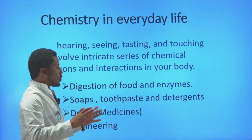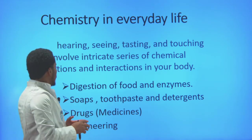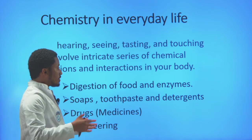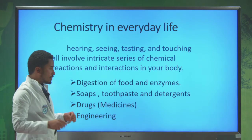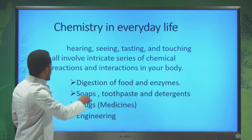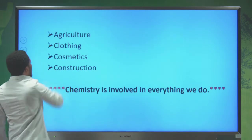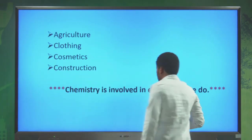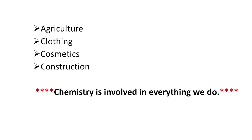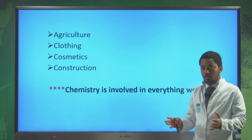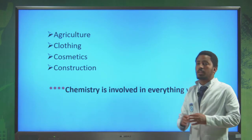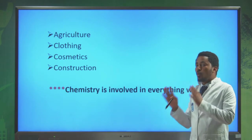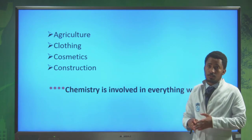The first one is the digestion of food. Soaps we use, the detergents, toothpaste are products of chemistry, as well as drugs or medicines. Even in engineering, the apparatus we use are made up of chemistry. In agriculture chemistry is very important because we use fertilizers, herbicides, pesticides — these are the products of chemistry. So chemistry plays a huge role in agricultural science.